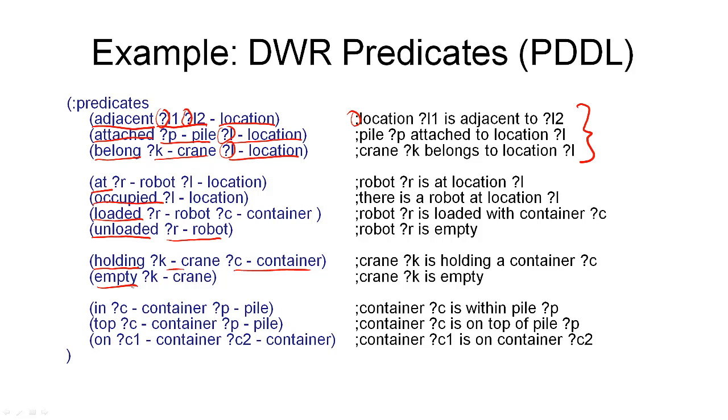You can see here that these relations are not independent of each other. For example, holding and empty are closely related. If the crane is empty, it cannot hold a container, and vice versa. If it is holding a container, it cannot be empty. The same goes for loaded and unloaded, and at and occupied. These two relations depend on each other.